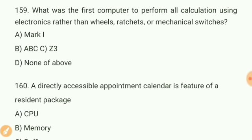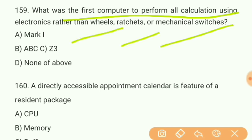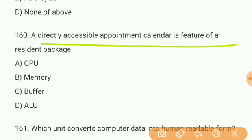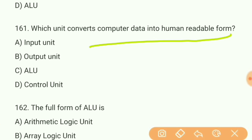Question 159: What was the first computer to perform all calculations using electronics rather than wheels, gears, or mechanical switches? Answer — ABC. Question 160: A directly accessible appointment calendar is a feature of what? Answer B — memory resident package. Question 161: Which unit converts computer data into human-readable form? Answer B — output unit. This is also an important question.